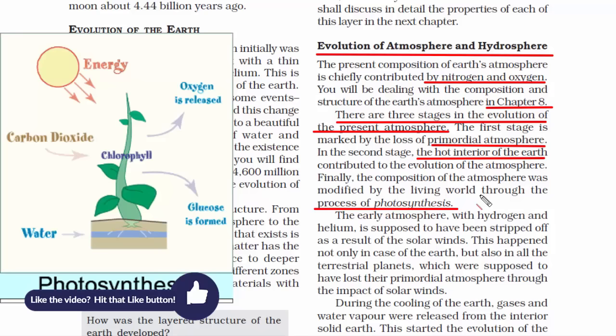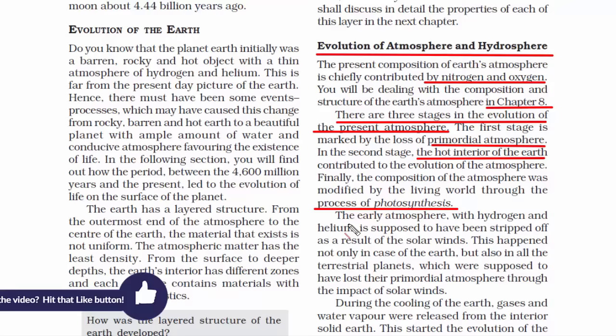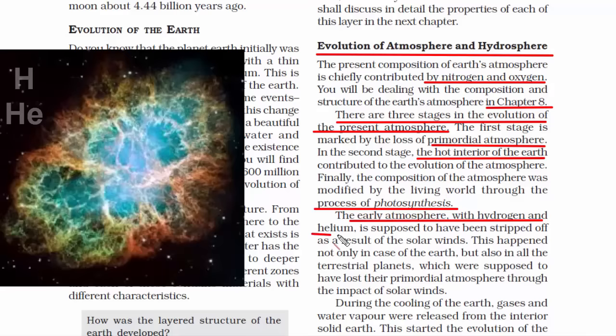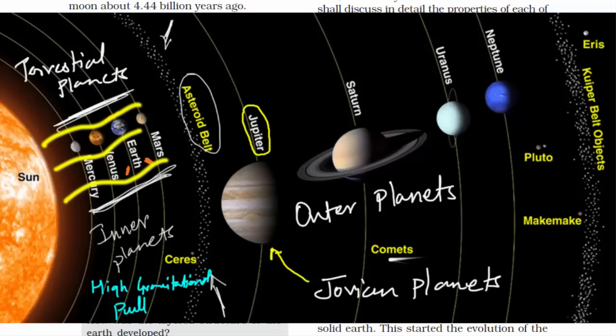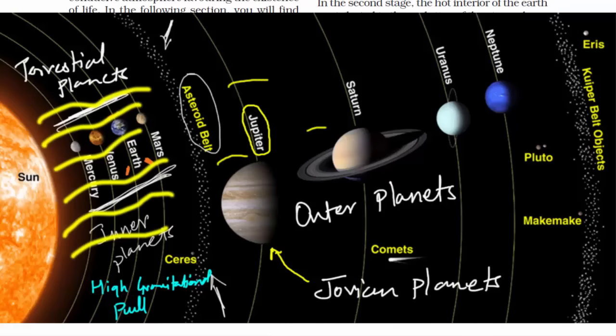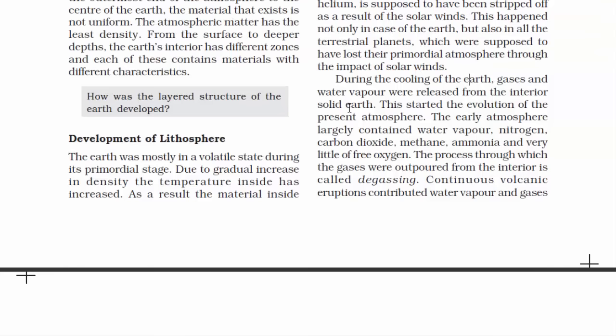Always remember the primordial atmosphere — the initial atmosphere when the Earth was beginning to form — consisted only of hydrogen and helium. That atmosphere went away because all the terrestrial planets, Mercury, Venus, Earth and Mars, are closer to the Sun and therefore received a lot of solar wind. This solar wind stripped off the hydrogen and helium atmosphere, which is why these planets don't look like the Jovian planets outside the asteroid belt.